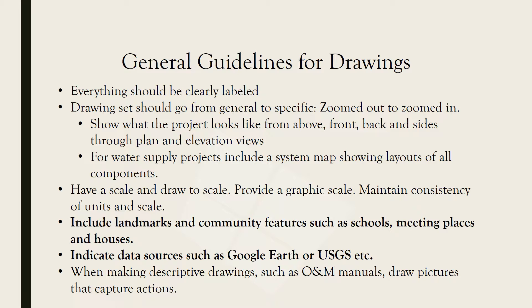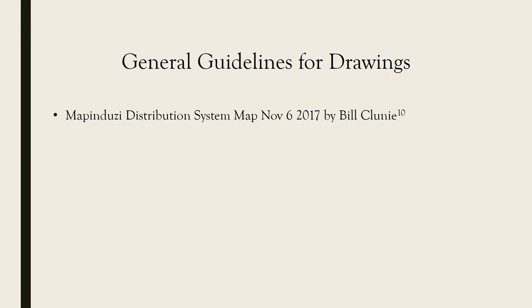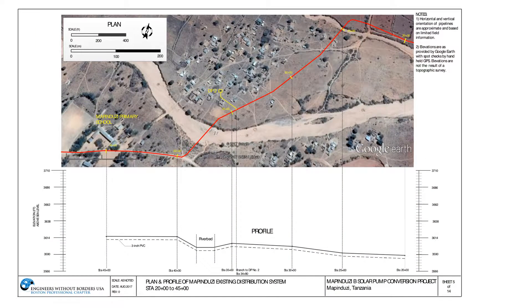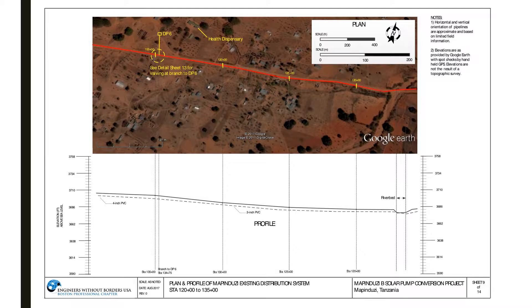We should include landmarks and community features such as schools and meeting places in our drawings to help with orientation. We should also indicate the sources of our data, such as Google Earth or USGS. To show how landmarks can be included and data sources cited, we'll use the Mapinto distribution system drawing. In this drawing set, there is a landmark indicated on the left — it reads 'Mapinto Primary School.' At the top of the slide there is also a health dispensary, which is very useful in determining the location of the model system.